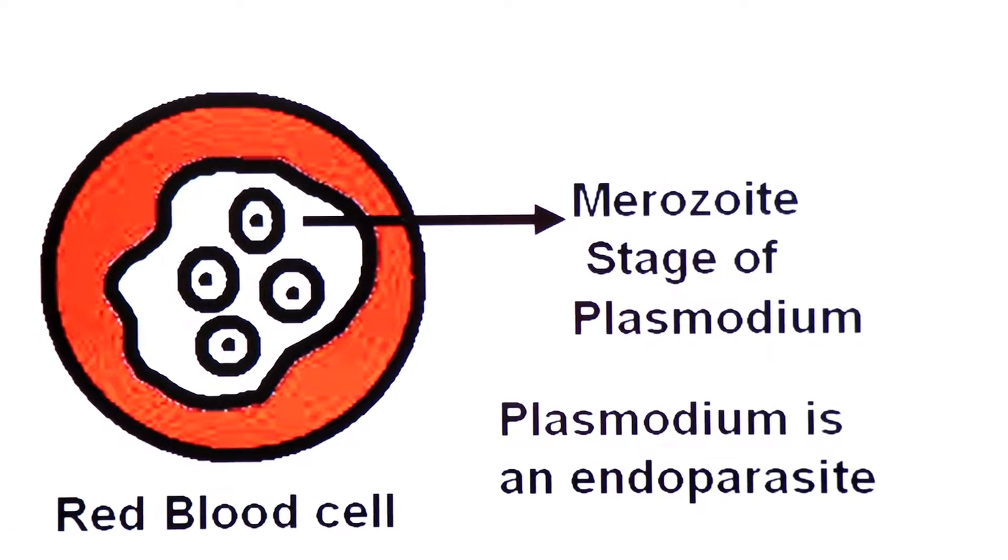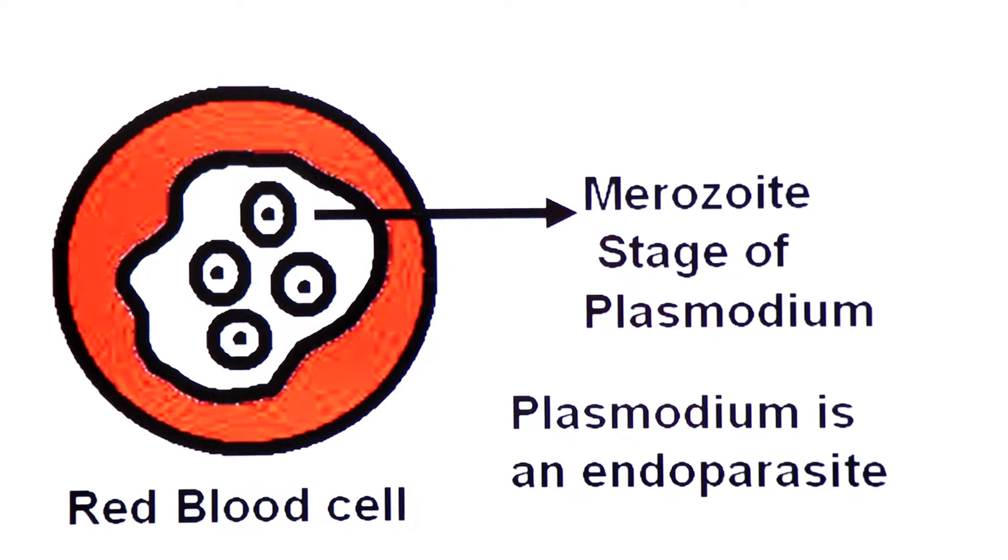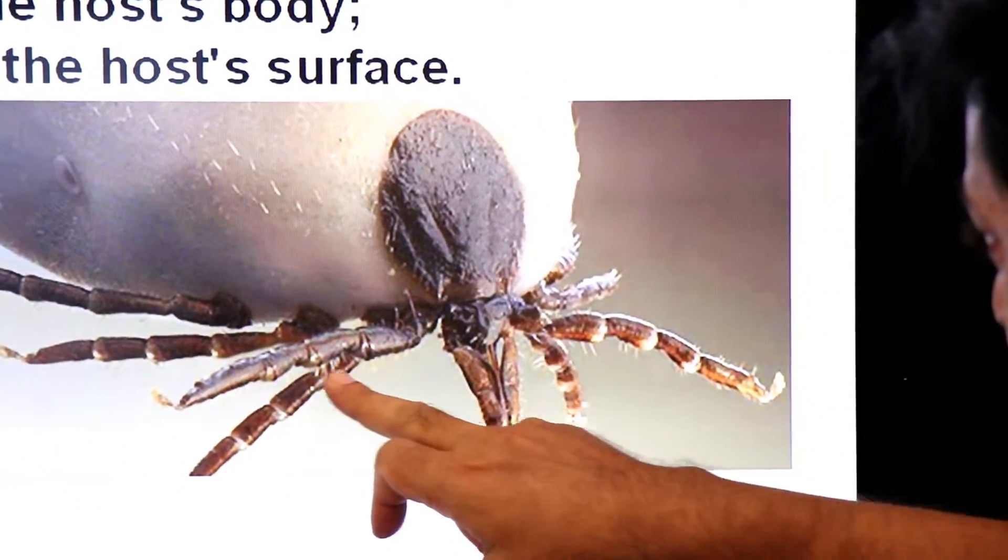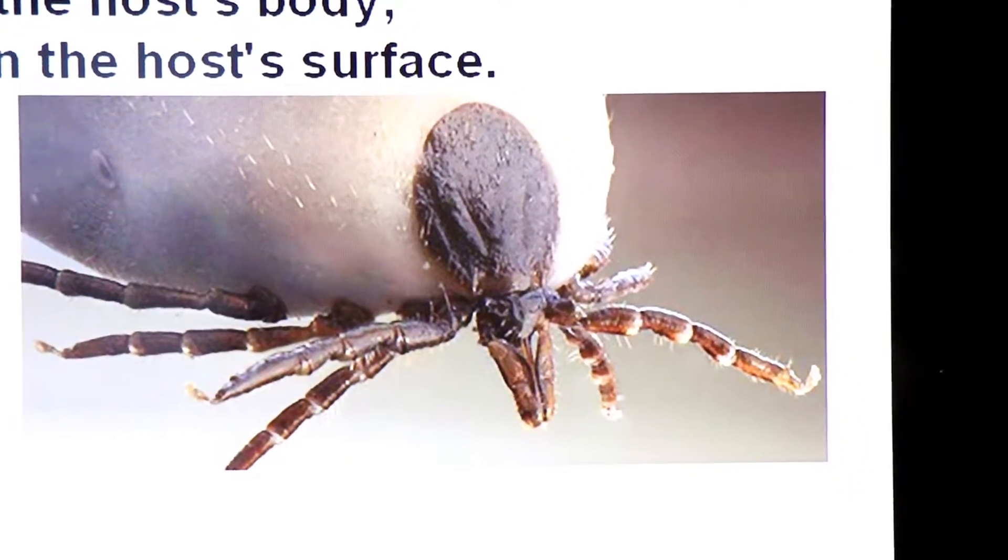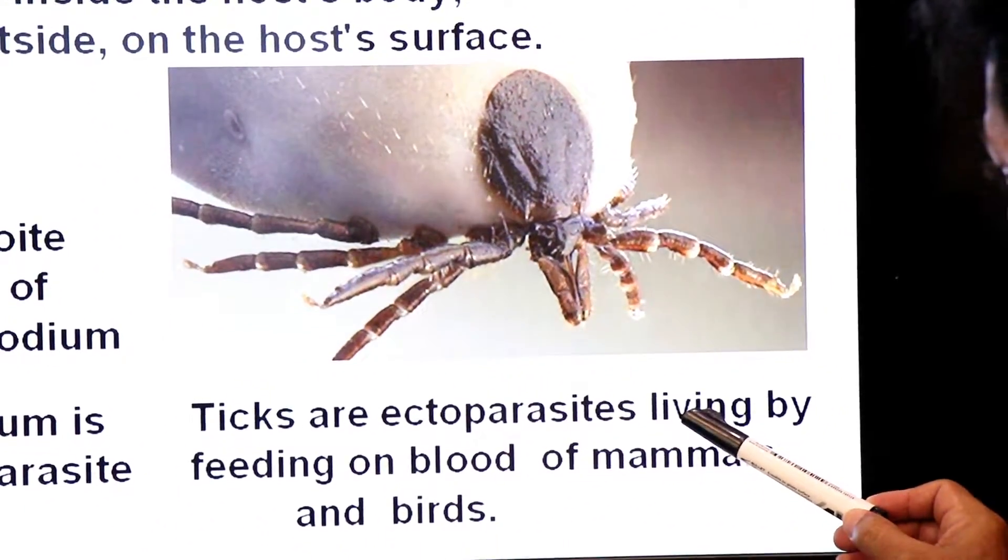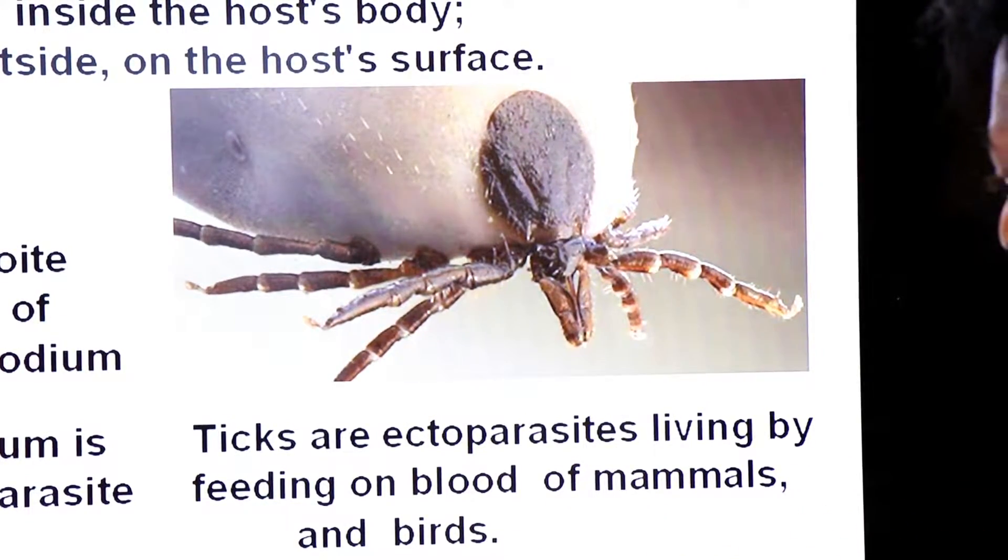Now let's take an example of ectoparasite. This is blood-sucking ectoparasite. These are known as ticks belonging to phylum Arthropoda. Dear student, ticks are ectoparasites living by feeding on blood of mammals as well as birds.